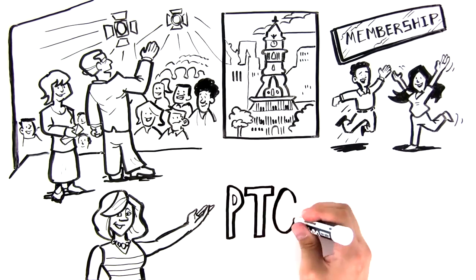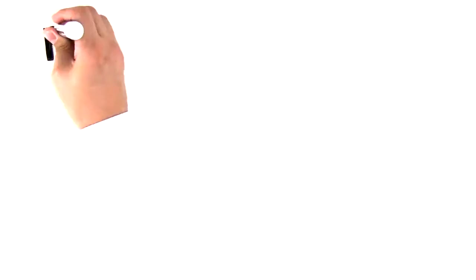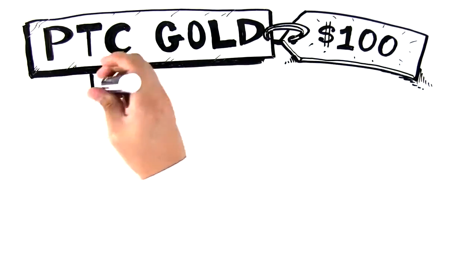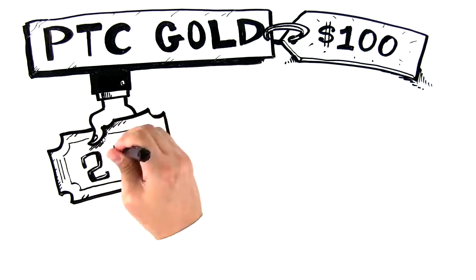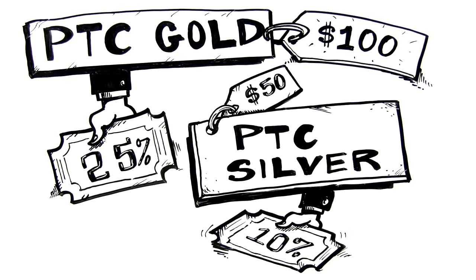What does a PTC membership look like? Think of memberships like the Amazon Prime of live theater. Choose a PTC Gold membership for just $100, where you'll receive 25% off a ticket to every show and event, or a PTC Silver membership for $50 with a 10% discount.